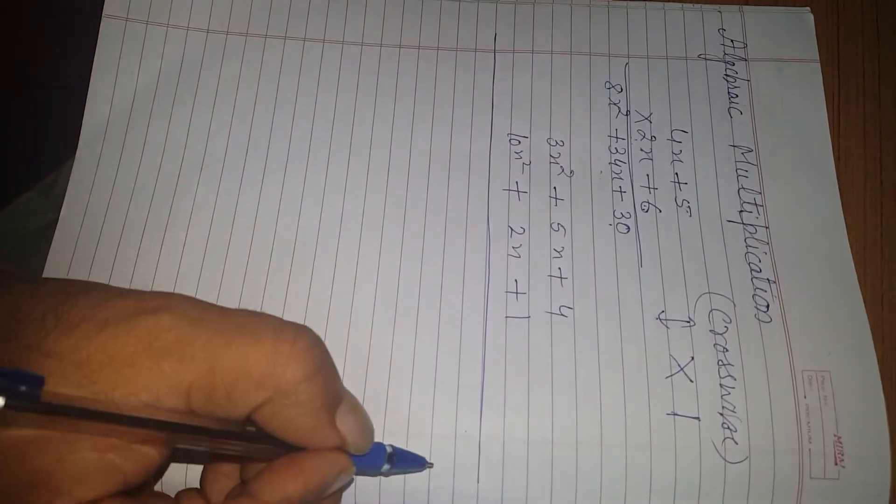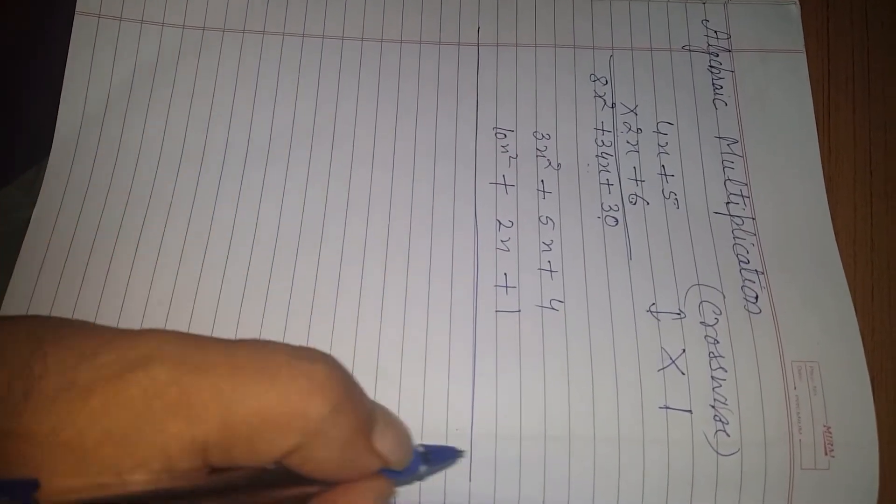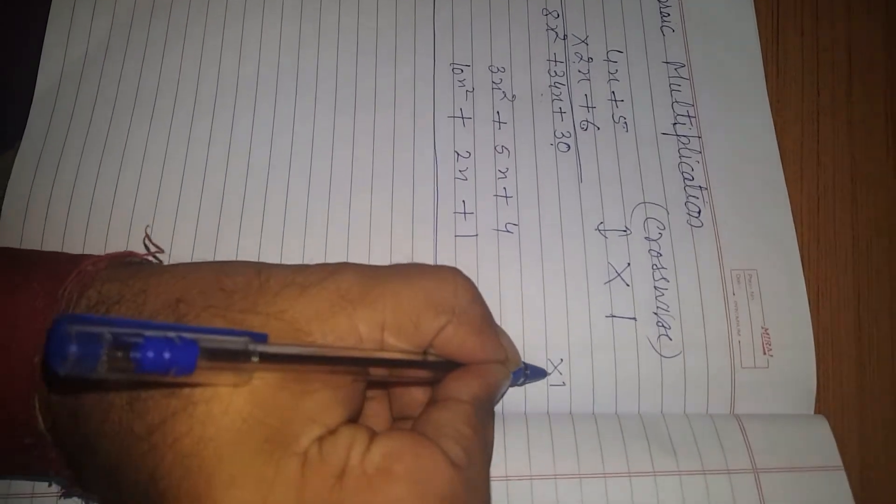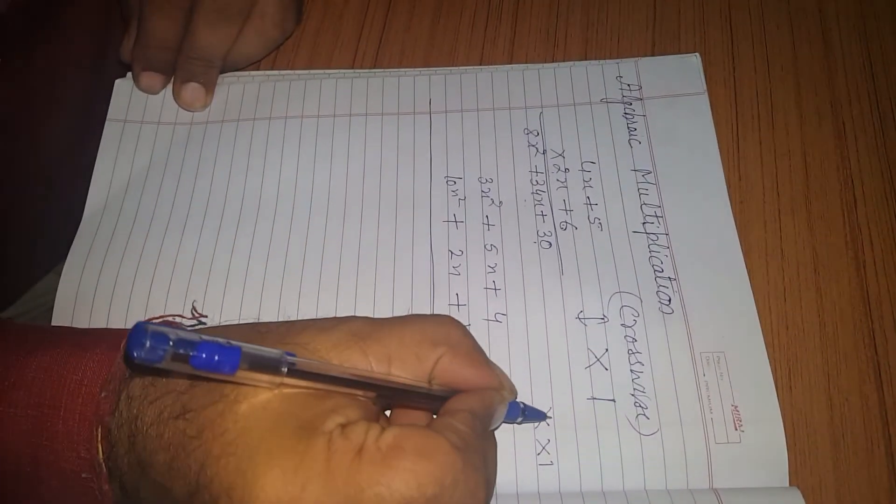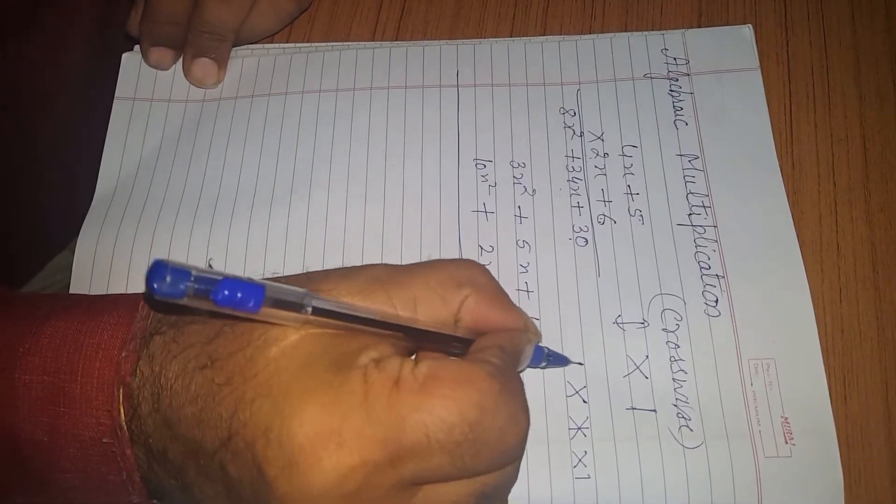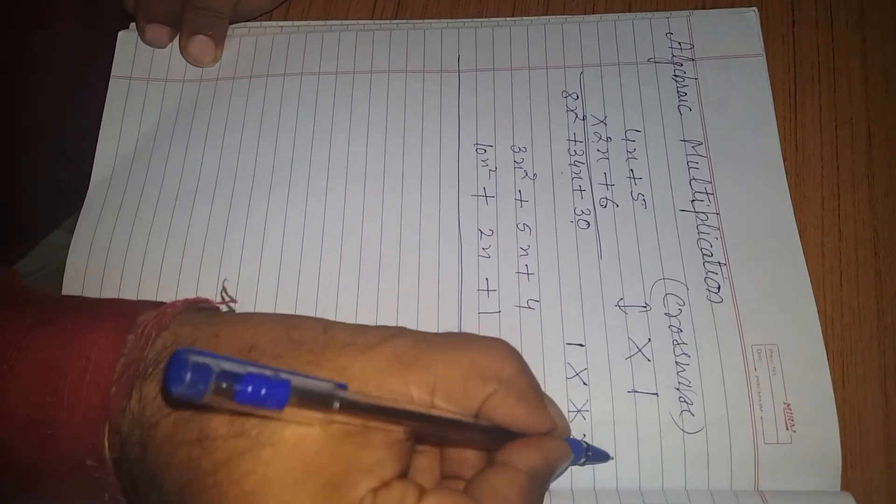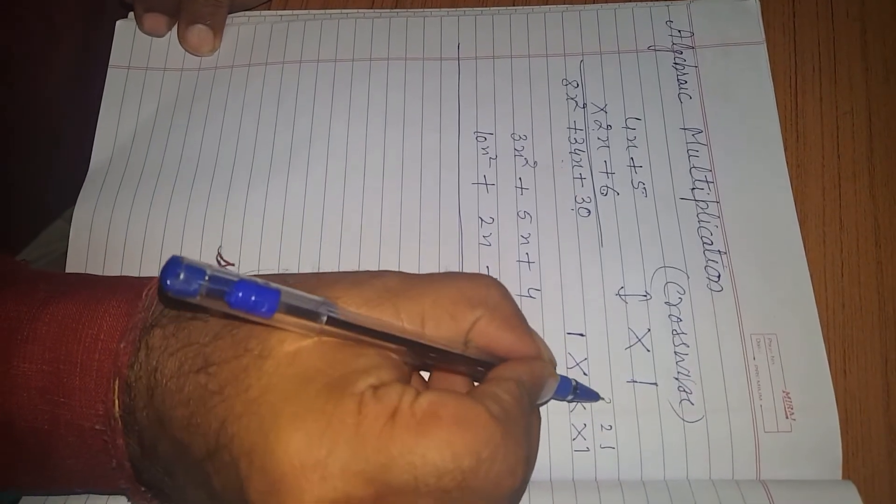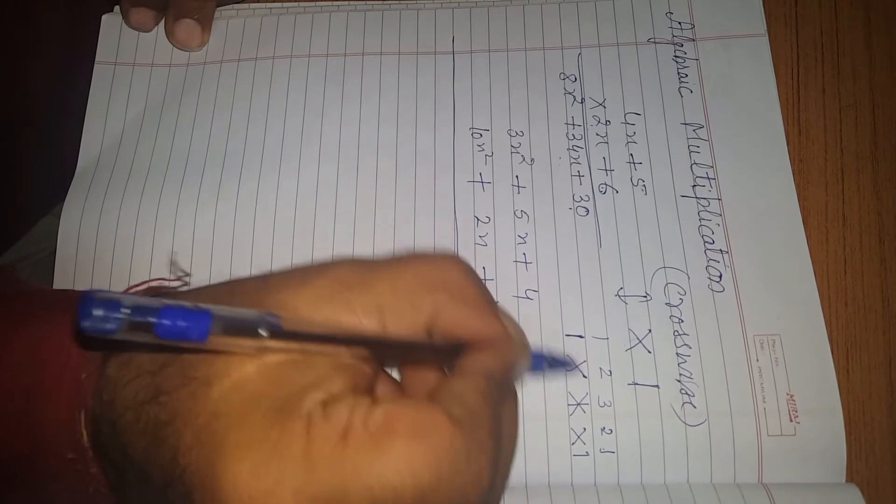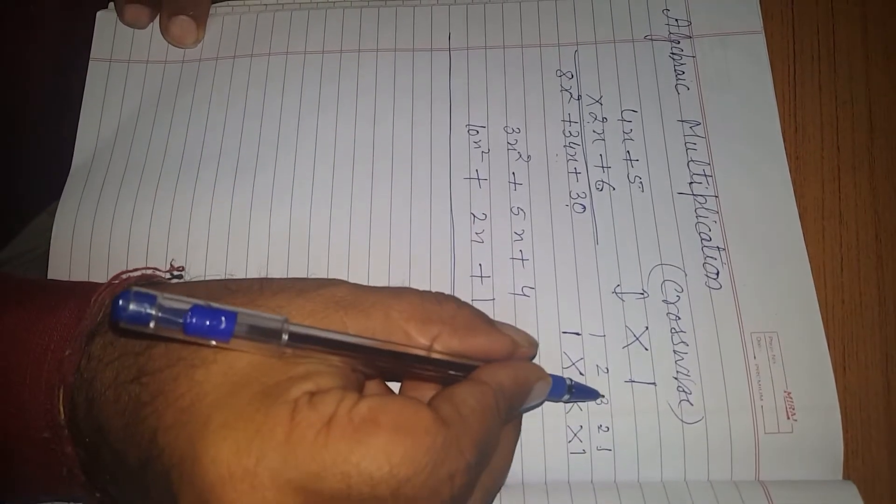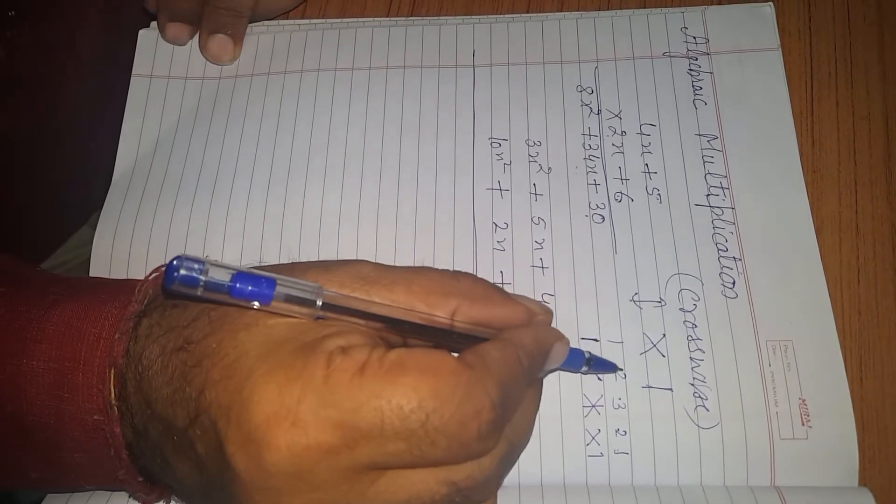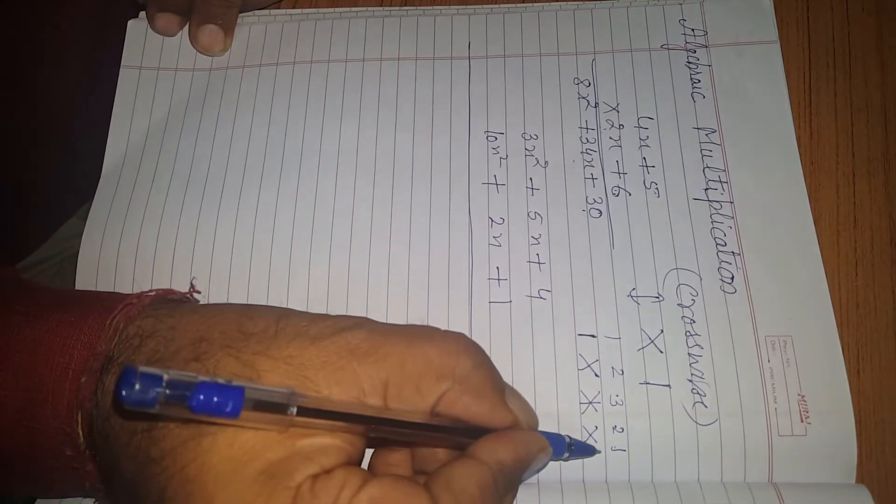Similarly, here will be 5 steps. First step is Vertical. Second is cross. Third is cross and vertical. Next is cross. And next is vertical. 1, 2, 3, 2, 1. Here are 3 terms. So, we will take up to 3. Then, we will reduce the number to 1.